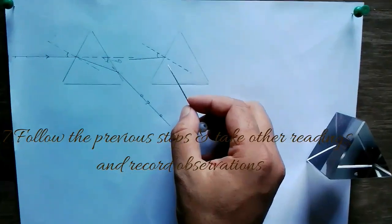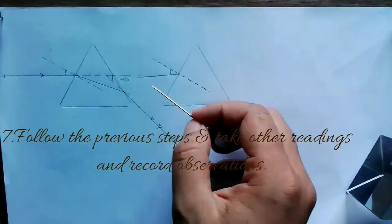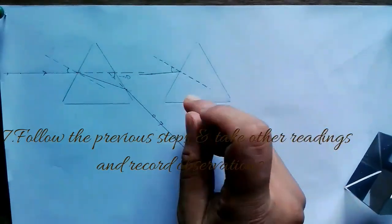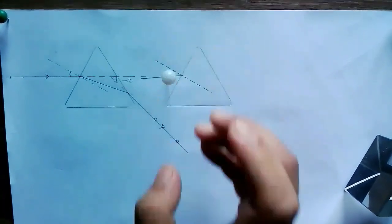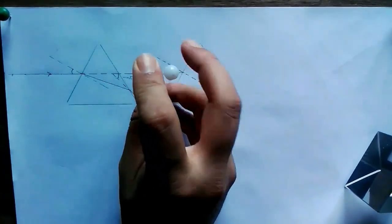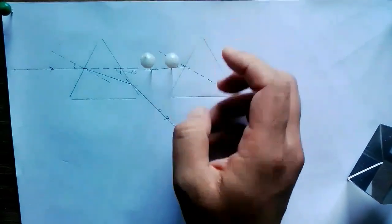Now take the angle of incidence as 35 degrees. Follow the previous steps: first fix the pins on the incident ray, place the prism on the boundary, and look at the images of the first two pins through the second refracting surface.